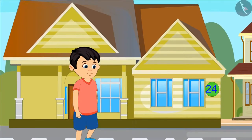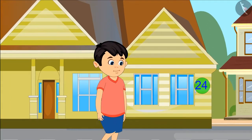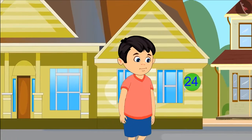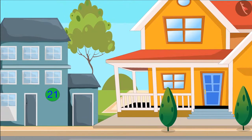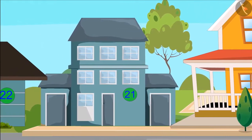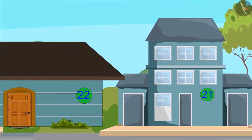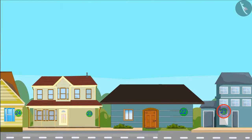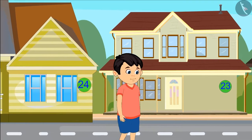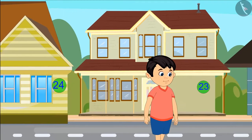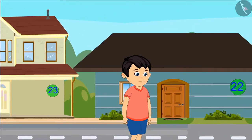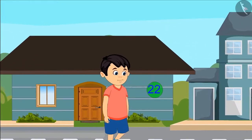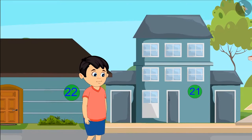Chotu reached Sham's place and both of them started playing. After some time Chotu left Sham's house and started going to his own house. Hey kids, do you remember that when Chotu came from his own place to Sham's house what all house numbers did he see? That's right, he saw numbers 21, 22, 23, and then 24. Now that he is going back, he left from house number 24. The number before it is 23, the number before it is 22, and one house before that is 21.